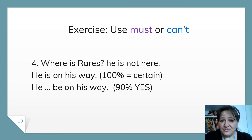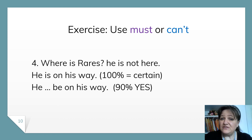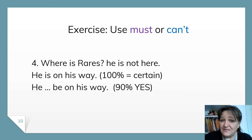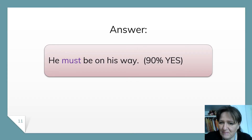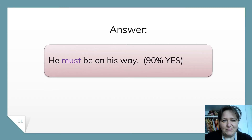Now, where is Raresh? He is not here, our dear boy. He is on his way — when I am 100% sure, I say he is on his way. But now let's use a modal verb to express 90% yes: he must be on his way. Great, you chose very well. He must be on his way.